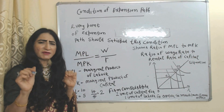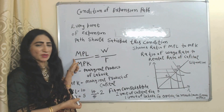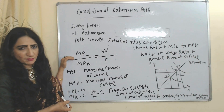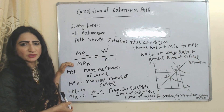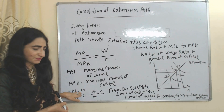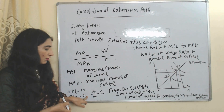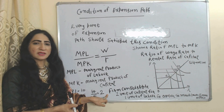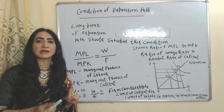Now we will see the condition of the expansion path. Every point of the expansion path should satisfy this condition: MPL over MPK, where MPL means marginal product of labor and MPK means marginal product of capital. For example, if the marginal product of labor is 10 and the marginal product of capital is 5, then 10 over 5 equals 2 — meaning the firm can substitute two units of capital for one unit of labor to maintain the same level of output.